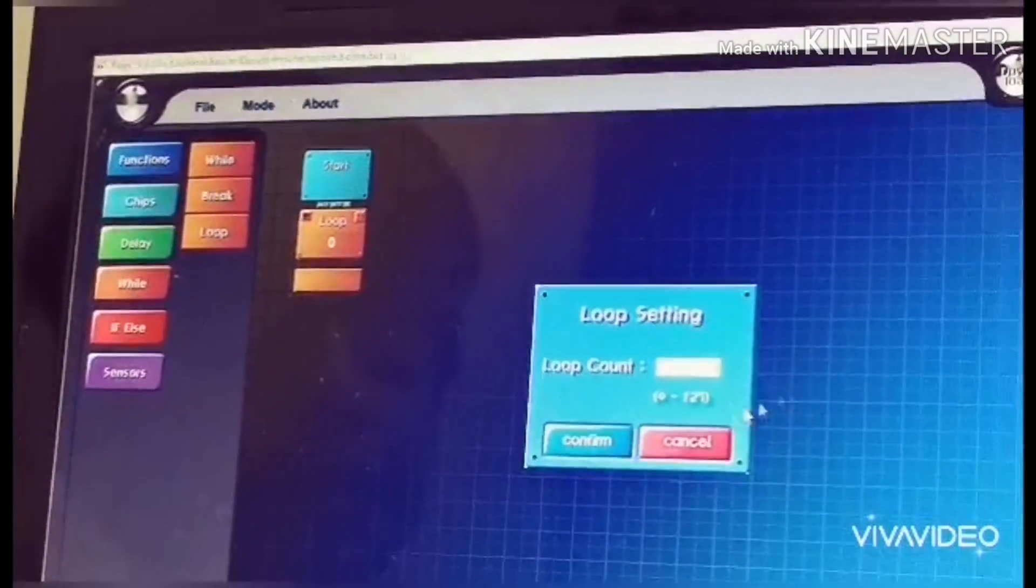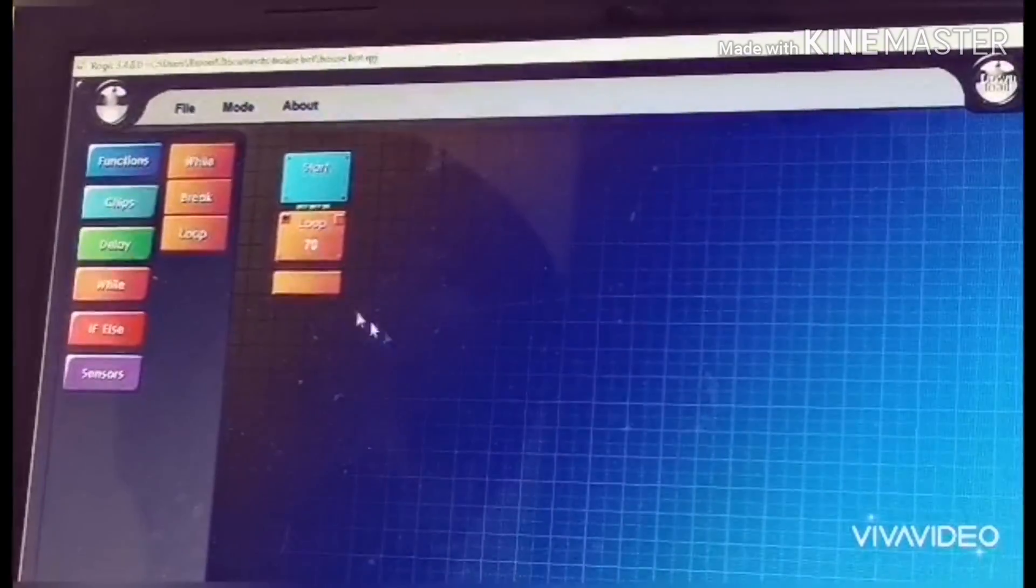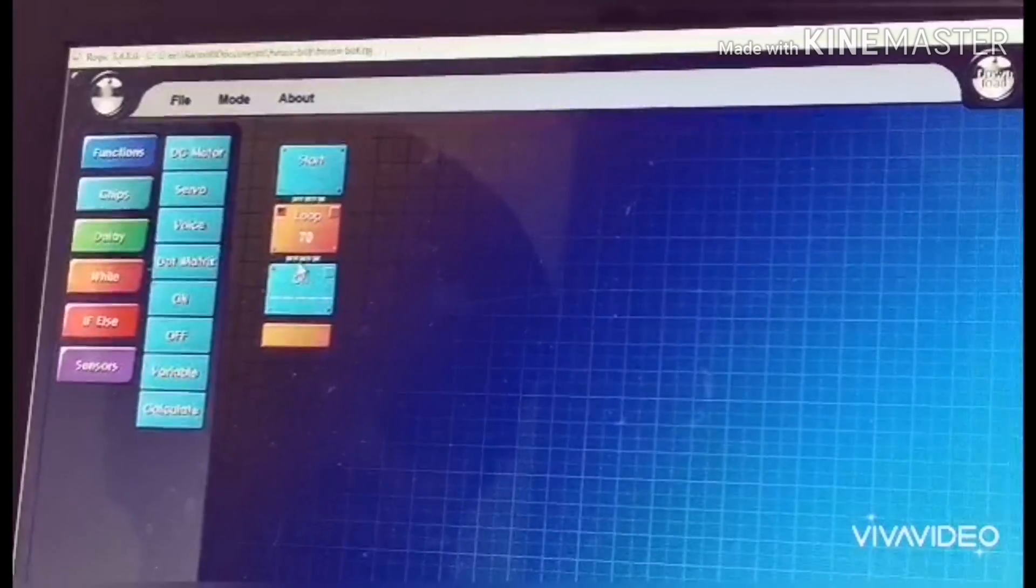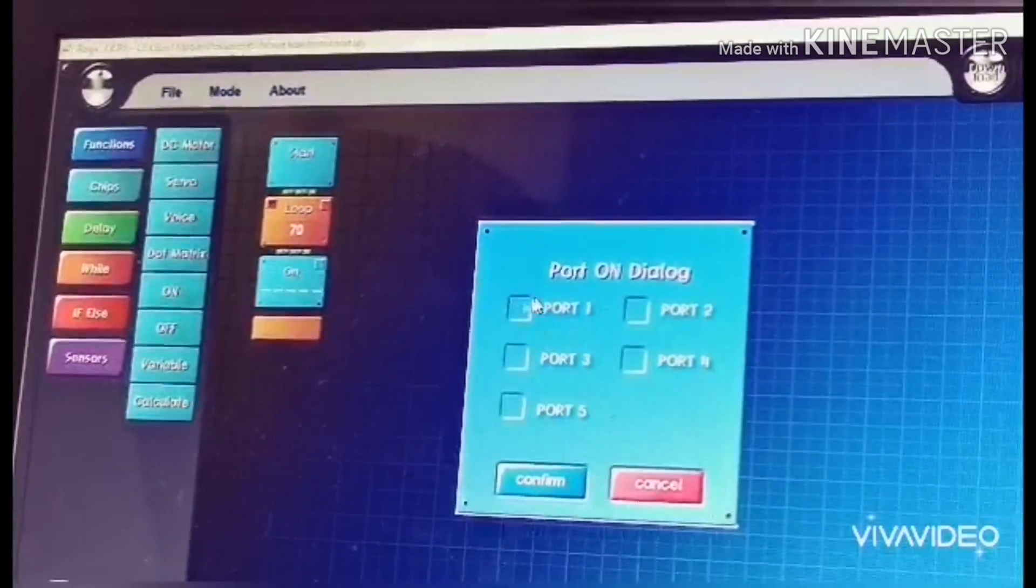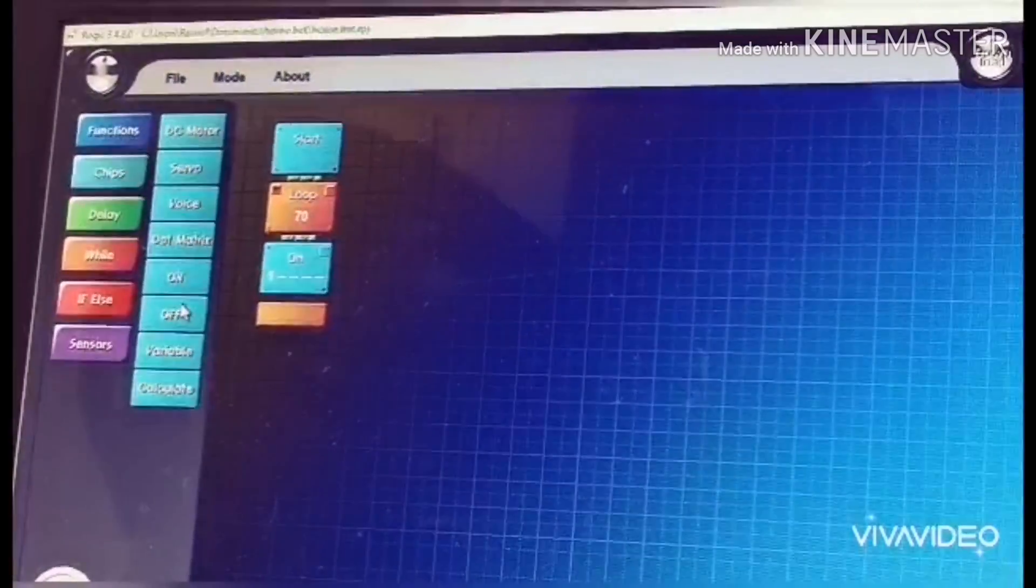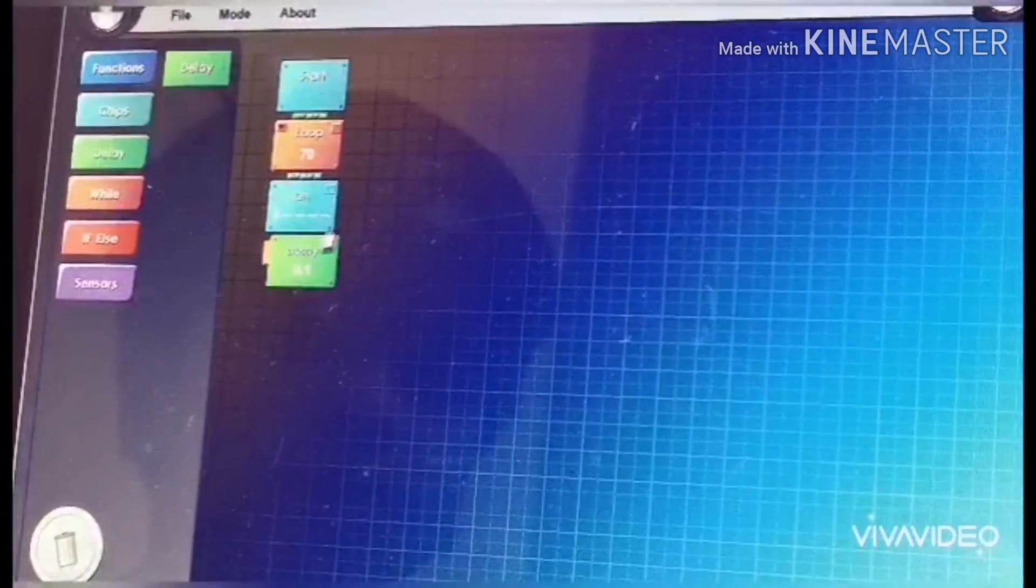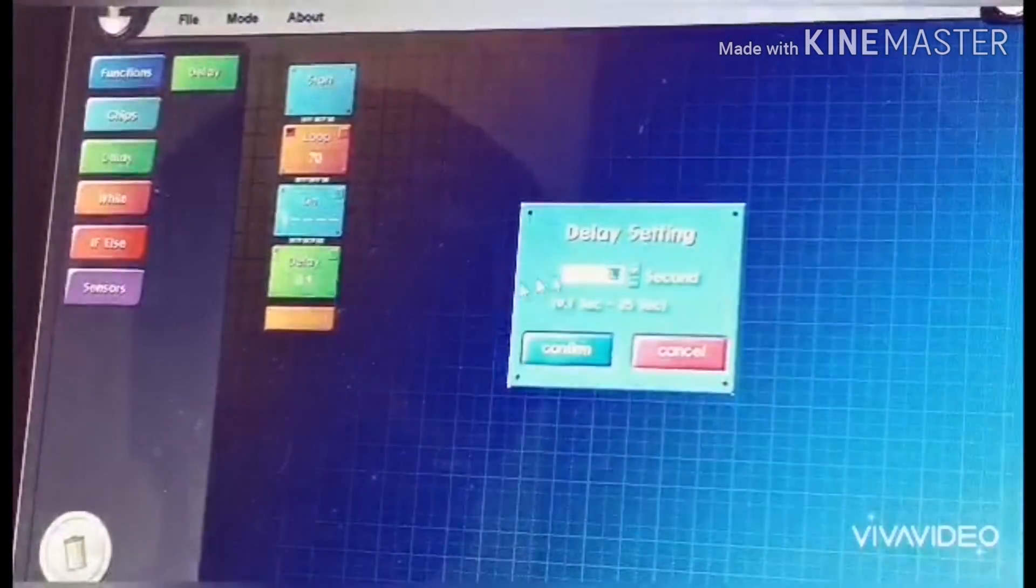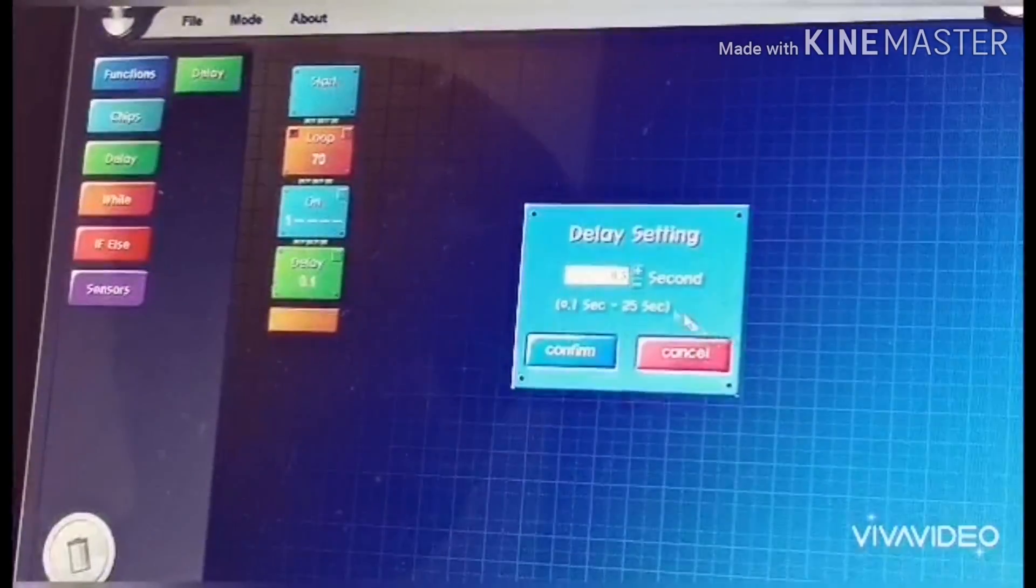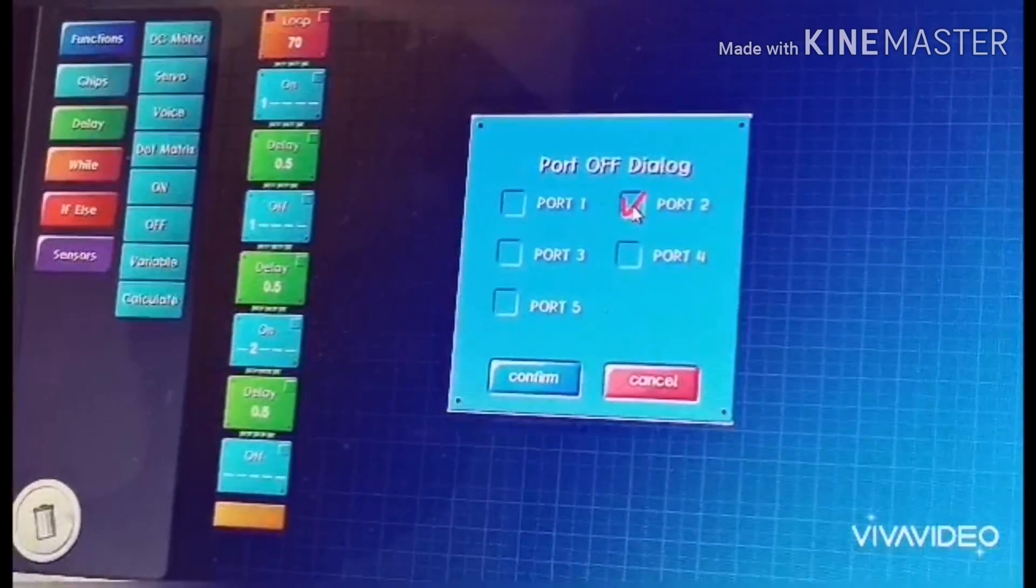Now let's repeat it like so many times. The loop count is 70 times. And we'll confirm it. Now you take this. You take the on one. The on right. So on board one. So we turn on the port. Now we take delay. Let's make the delay for 0.5 seconds to continue this process for a while. Until you do port 1, 2, 3 and 4.